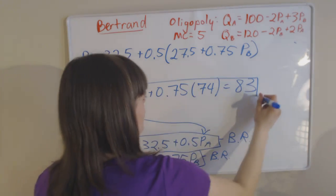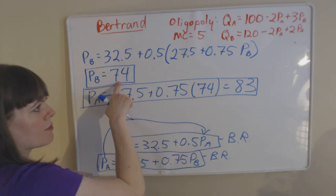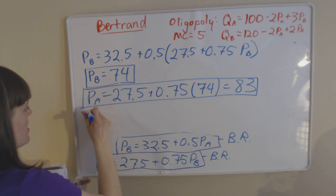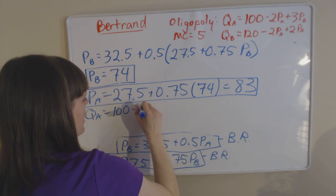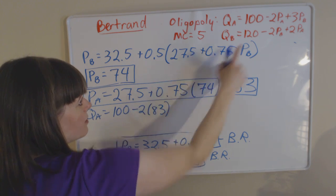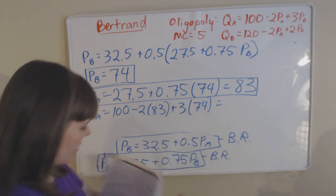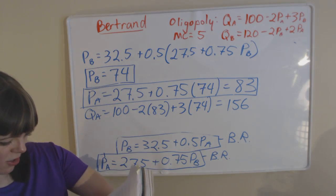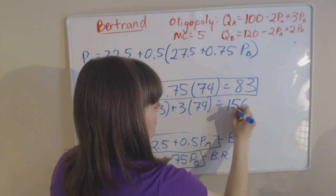We now have the price of firm A (83) and the price of firm B (74). Now all we need are the quantities for both firms, which we get by plugging these prices into the firms' demand functions. The quantity of firm A equals 100 minus 2·(83) plus 3·(74). When we plug those in, we get the quantity that firm A will produce: 156.